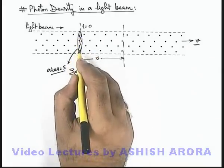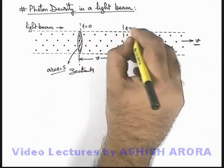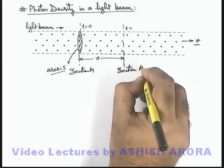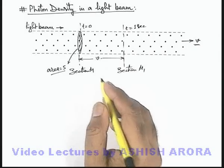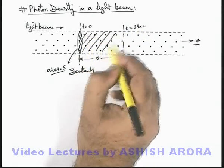So all those particles which are at t equal to zero located on this section, these particles will reach this new section, which can be written as section M1, at t equal to 1 second. That means in 1 second duration, all those particles which are there within this region